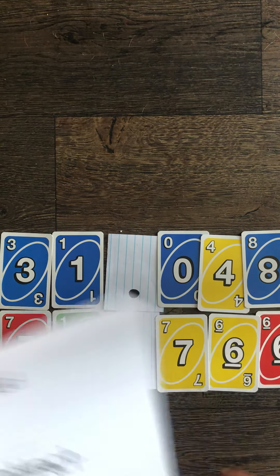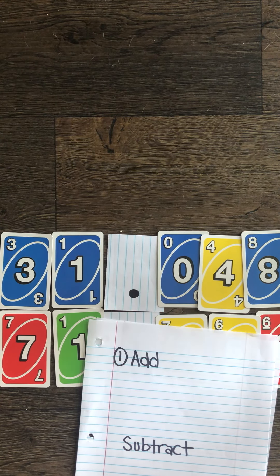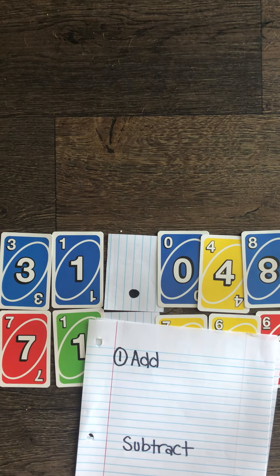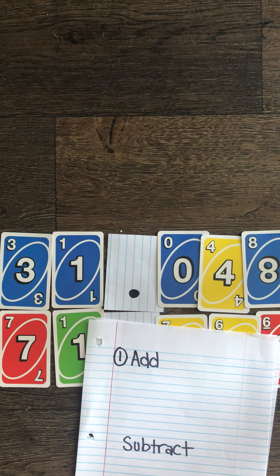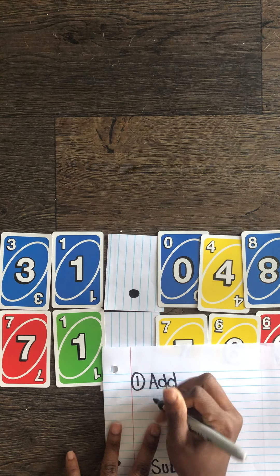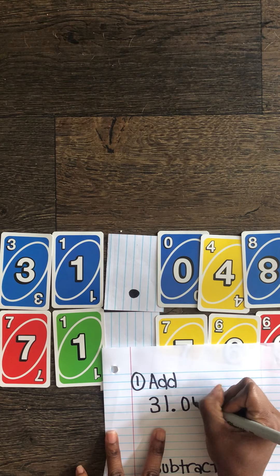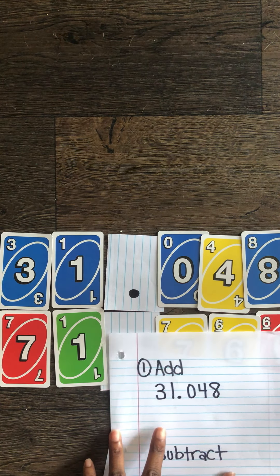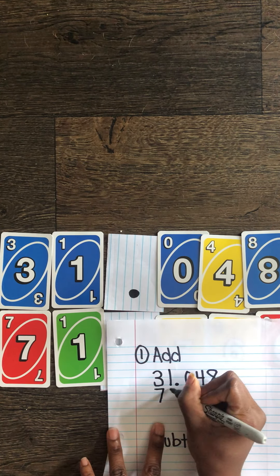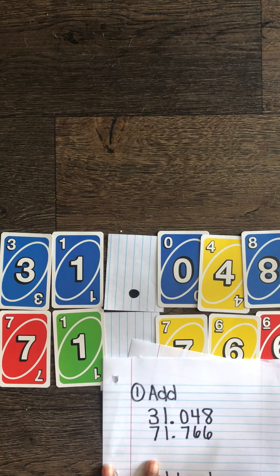You're gonna take your scrap paper and add these two numbers together first. So I'm gonna write this down. Thirty-one and forty-eight thousandths. And then my second number. Seventy-one and seven hundred sixty-six thousandths.